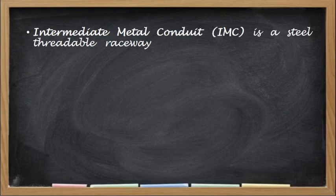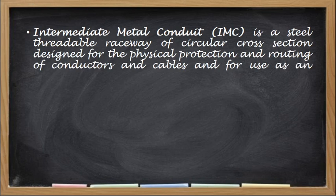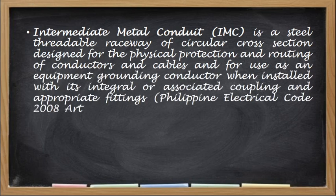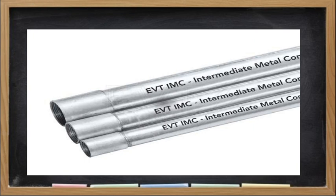We have the Intermediate Metallic Conduit or IMC — a steel threadable raceway of circular cross-section designed for the physical protection and routing of conductors and cables, and for use as an equipment grounding conductor when installed with its integral or associated coupling and appropriate fittings. Like RMC, the standard length of IMC is 3000 mm. This is a photo of an intermediate metallic conduit.